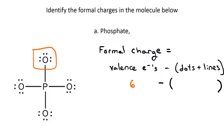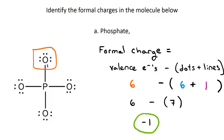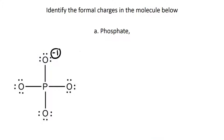There are six dots around that oxygen and one line. So the formula for formal charge gives us six minus seven, which is negative one.